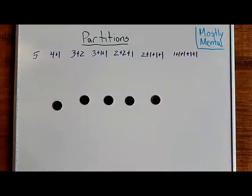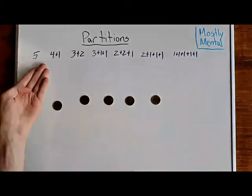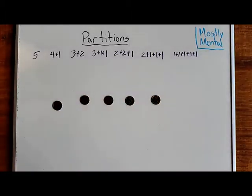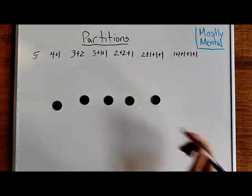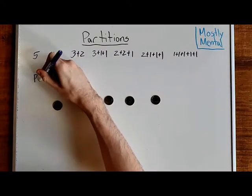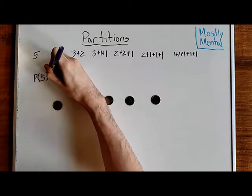And in total, that gives us seven ways to partition five objects. So, we write that p of five is seven.